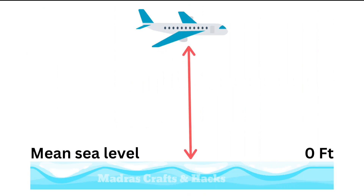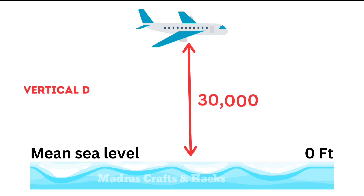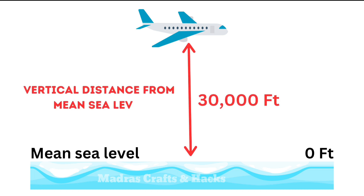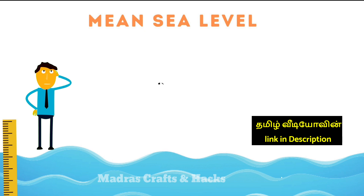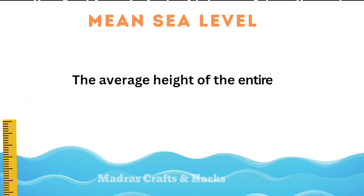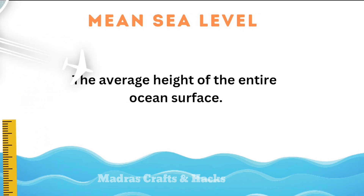Altitude is defined as the vertical distance between the object and the mean sea level, measured usually in feet. Now you might have a question: what is mean sea level and how it is measured? The average height of the entire ocean surface is called mean sea level.